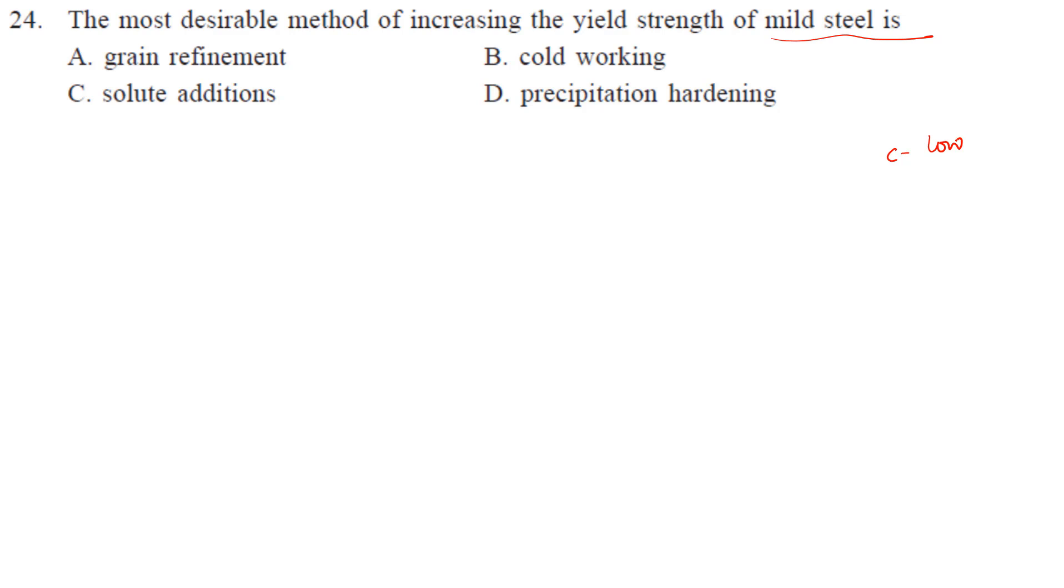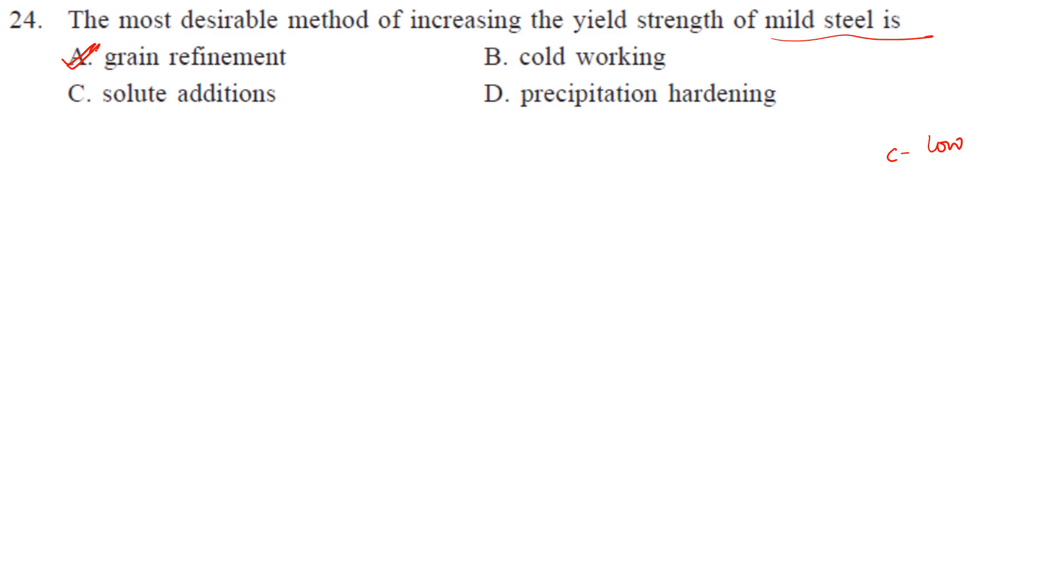Solute additions can also be done. Precipitate hardening in a low carbon steel is not generally done. From the options, the first one, grain refinement, is best because in grain refinement you only need to control the heat treatment process and nothing else.